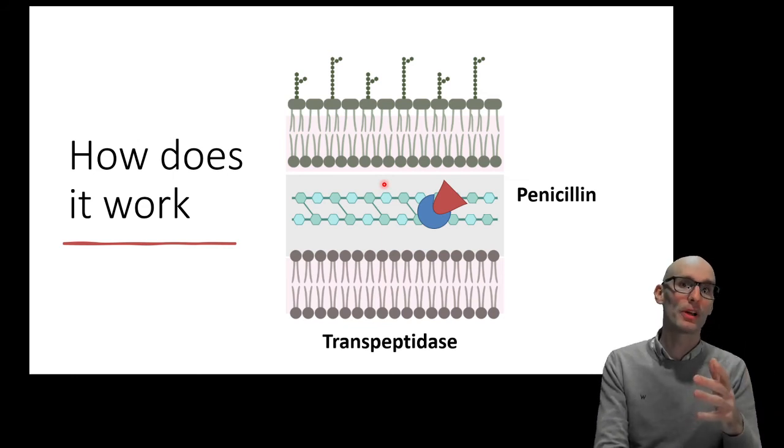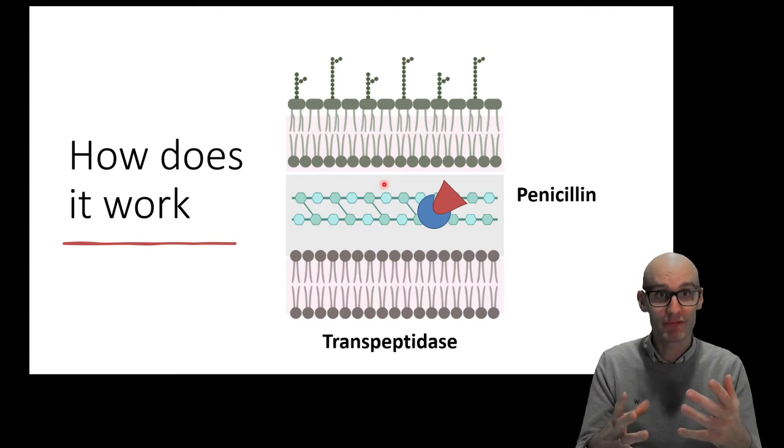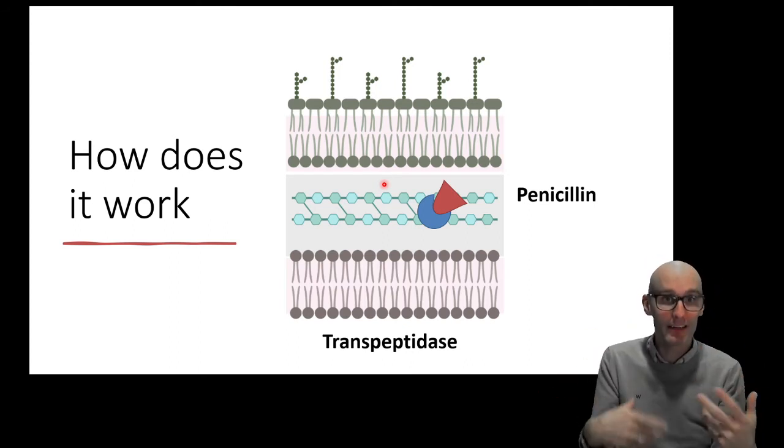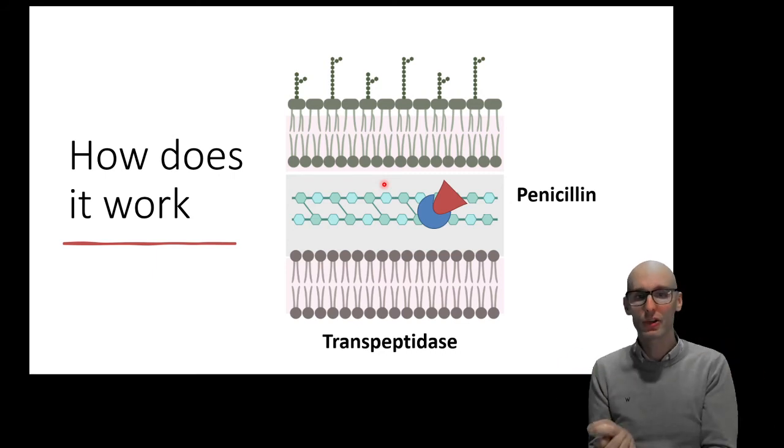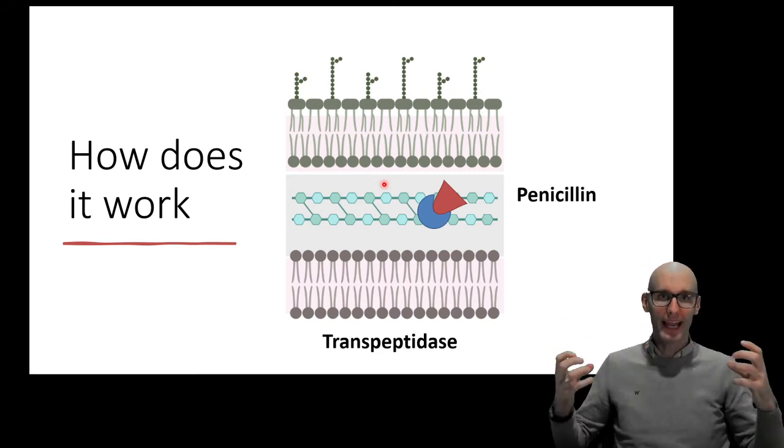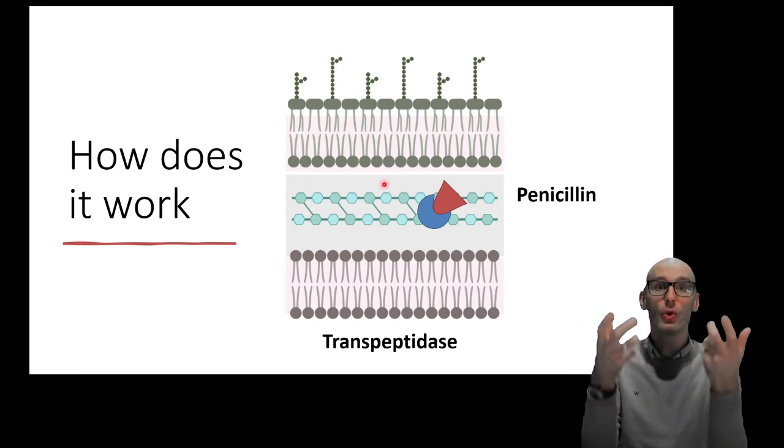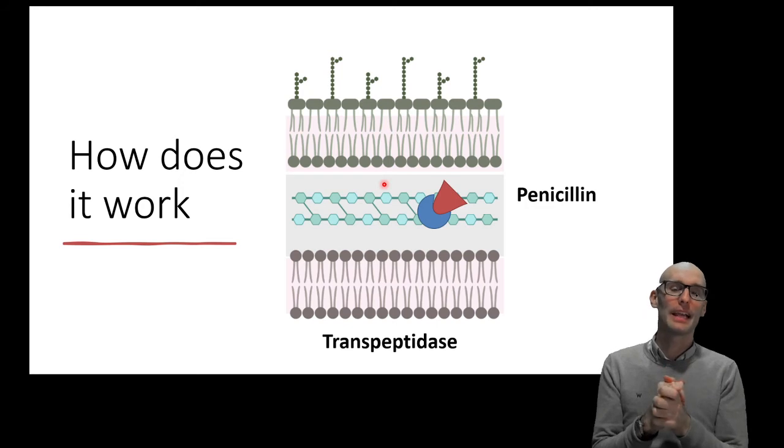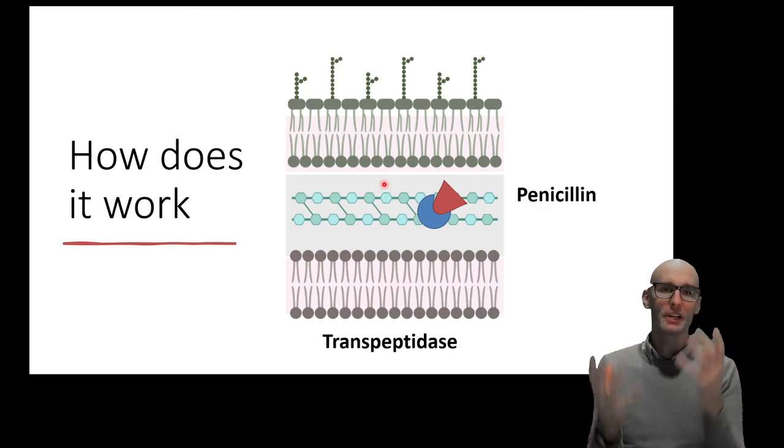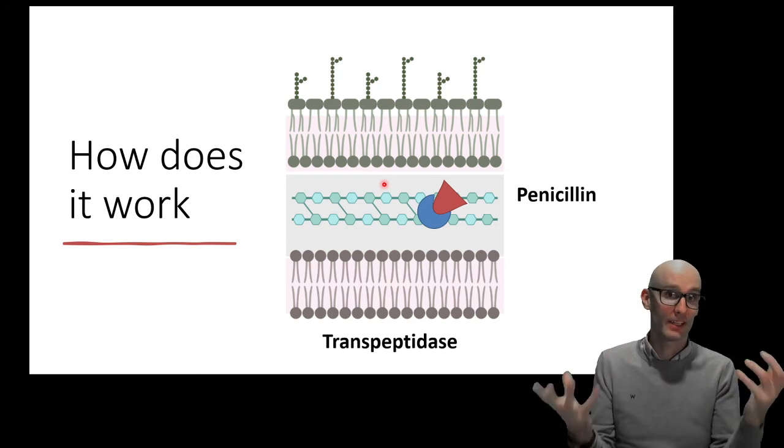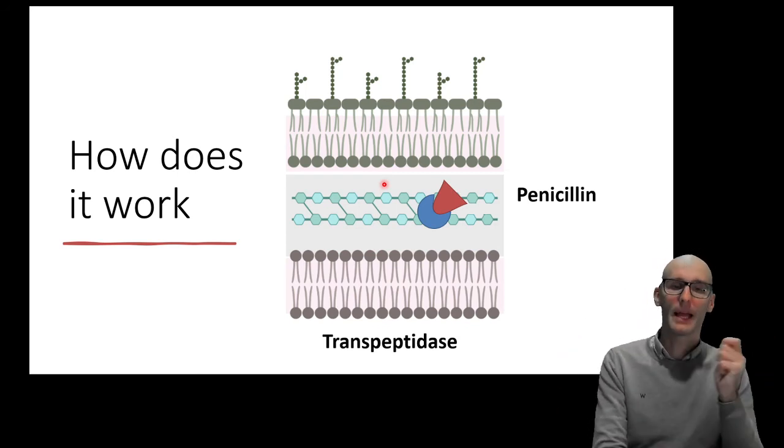So it blocks the formation of new bacterial cell walls. Now that's critical because bacteria are constantly remodeling their cell walls. It's not a rigid structure that stays there forever. They're repairing it, they're remodeling it. They can't do that in the presence of penicillin. But also critically, when they divide, they have to create two new cell walls. But they can't. And so they end up either as naked bacteria, or very vulnerable bacteria without a cell wall, and they're very easy to die. They often lyse, in fact. So this is how penicillin works.